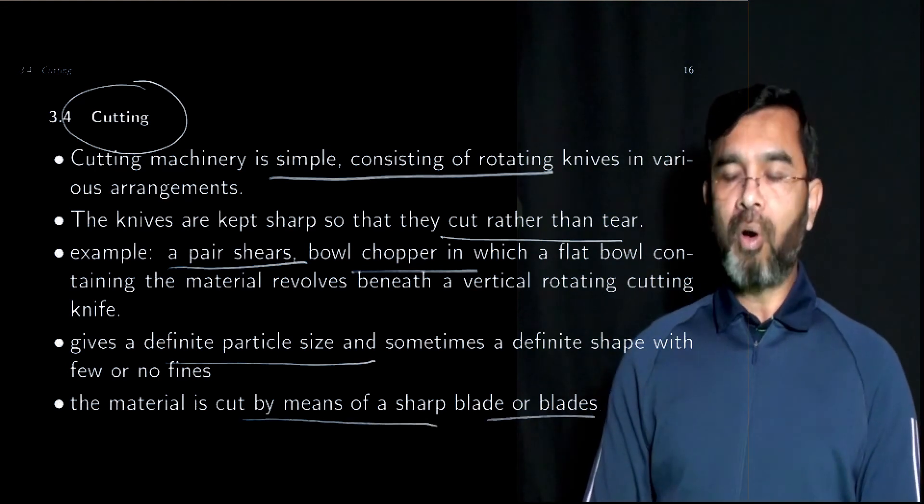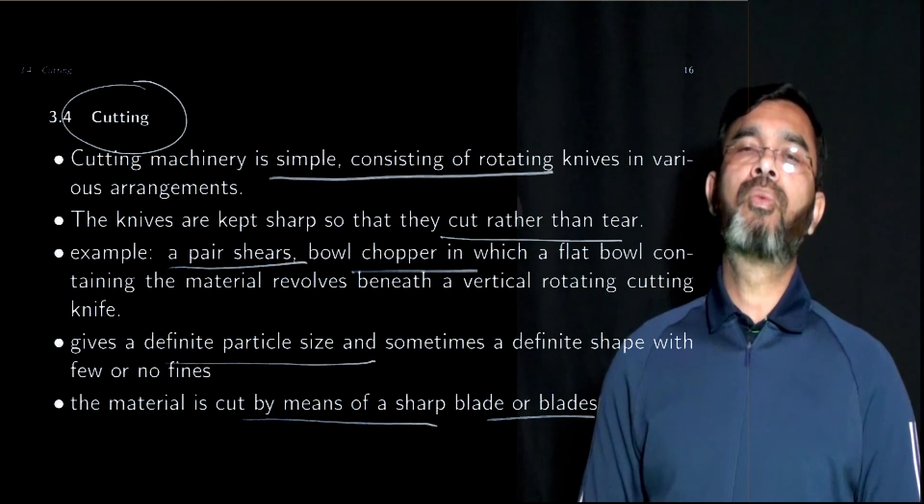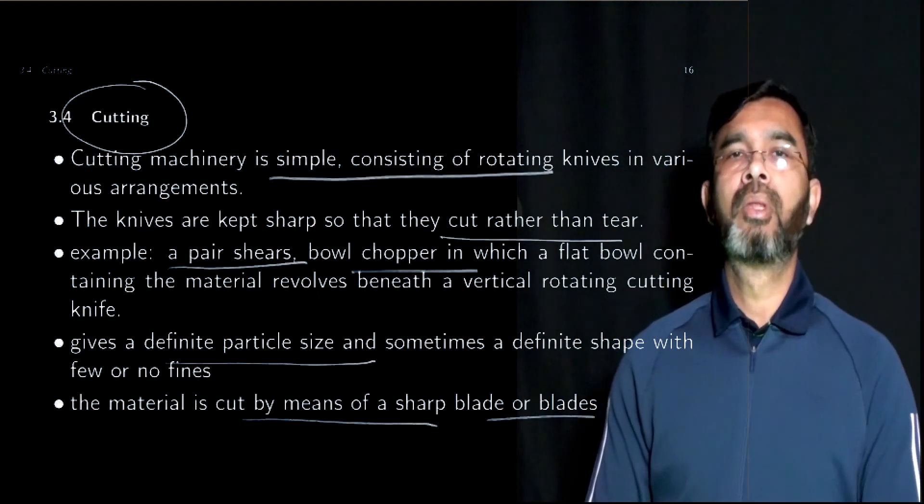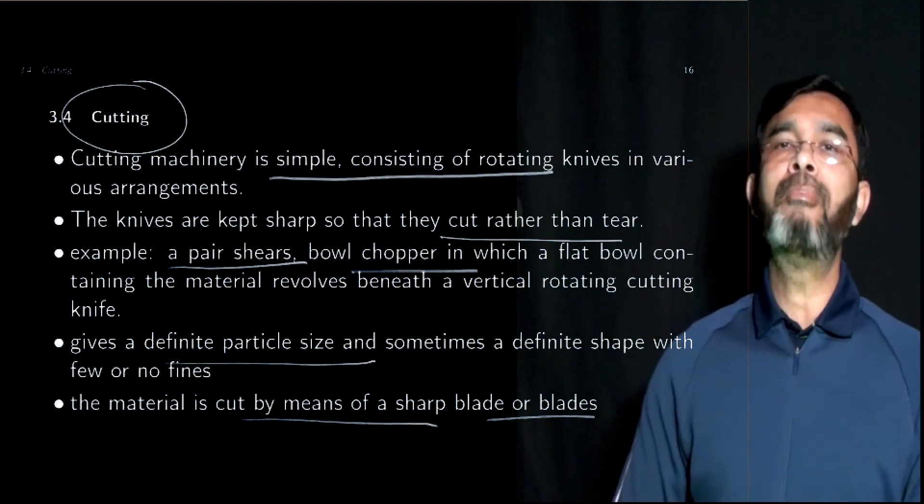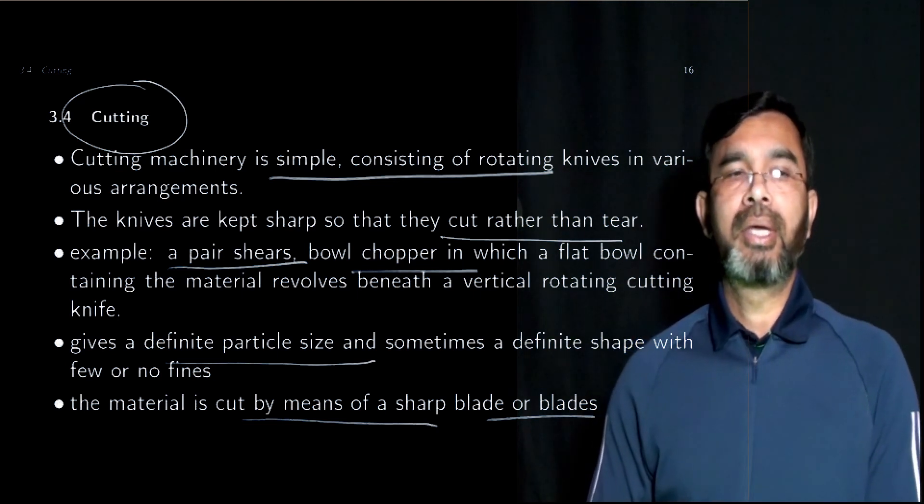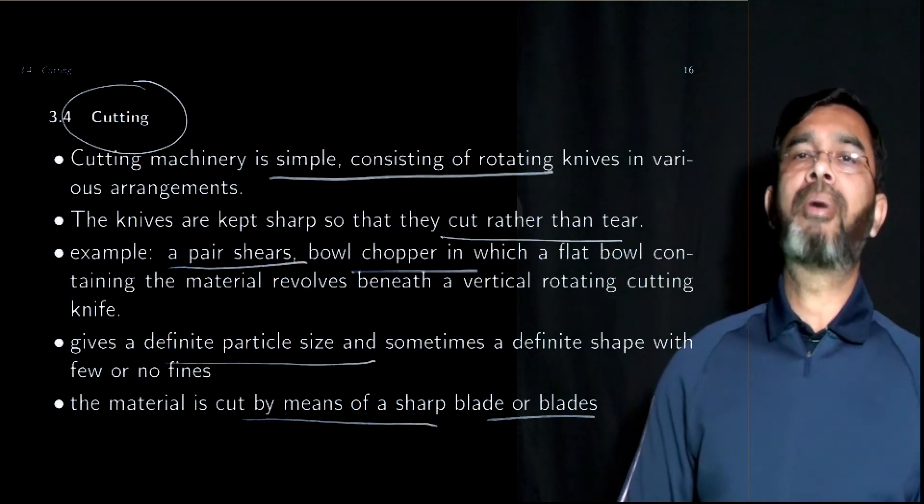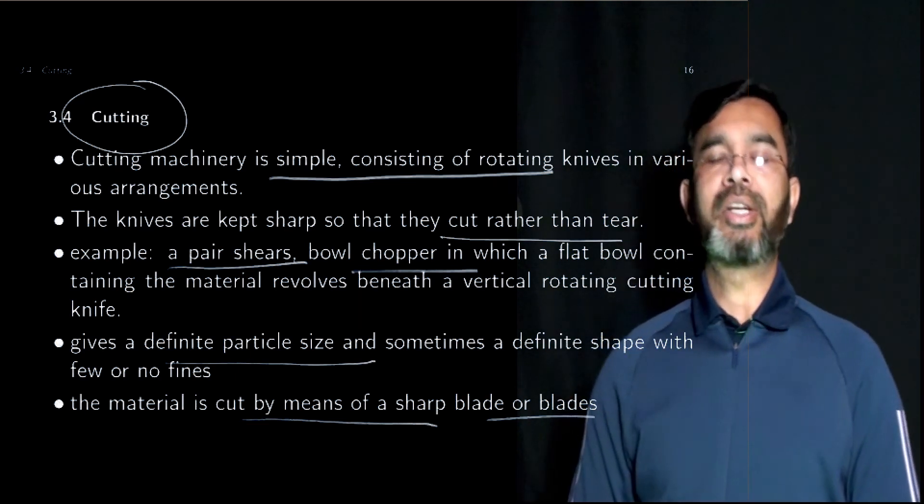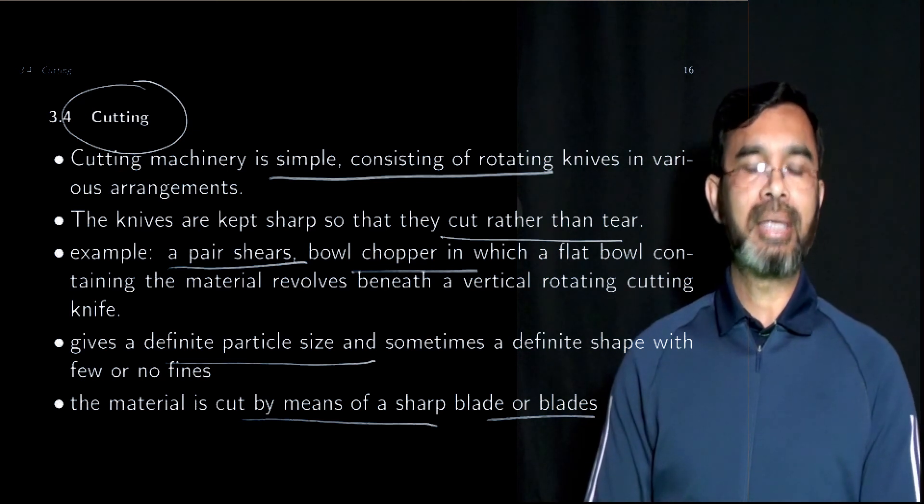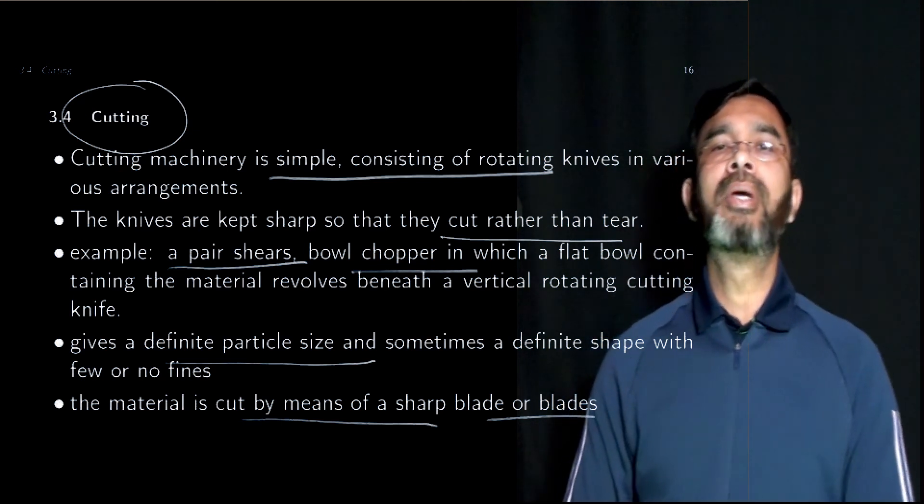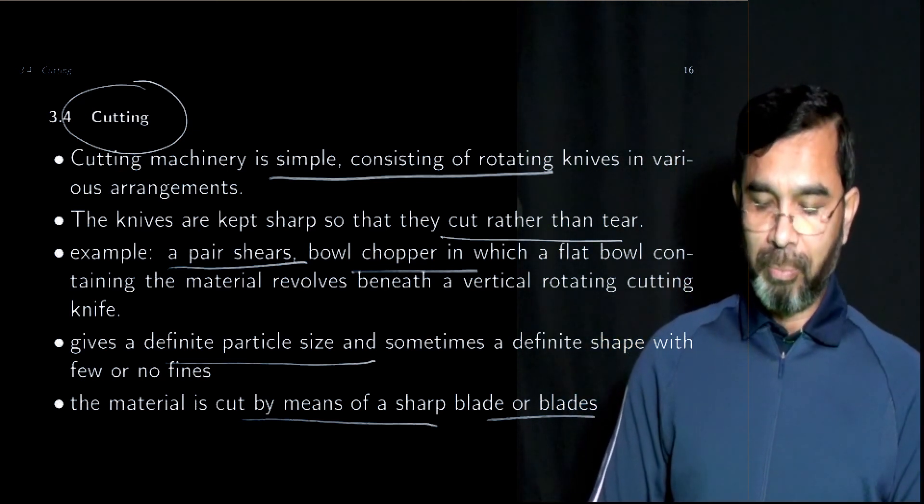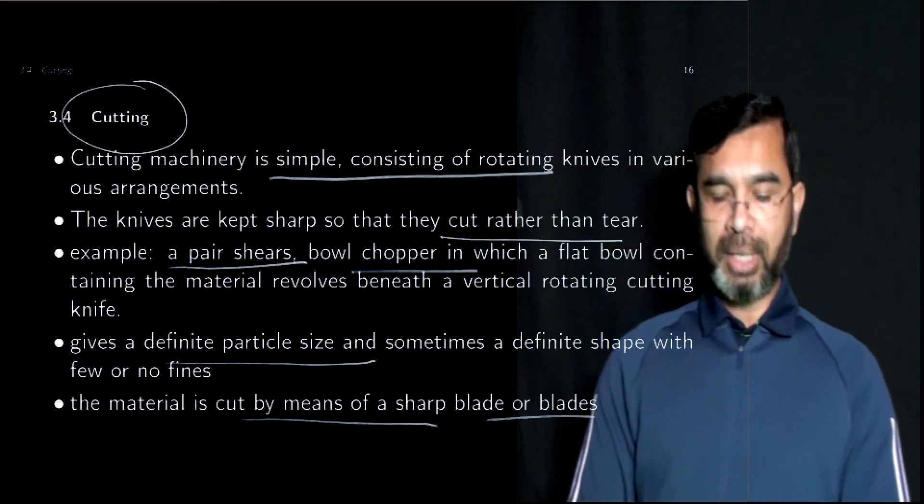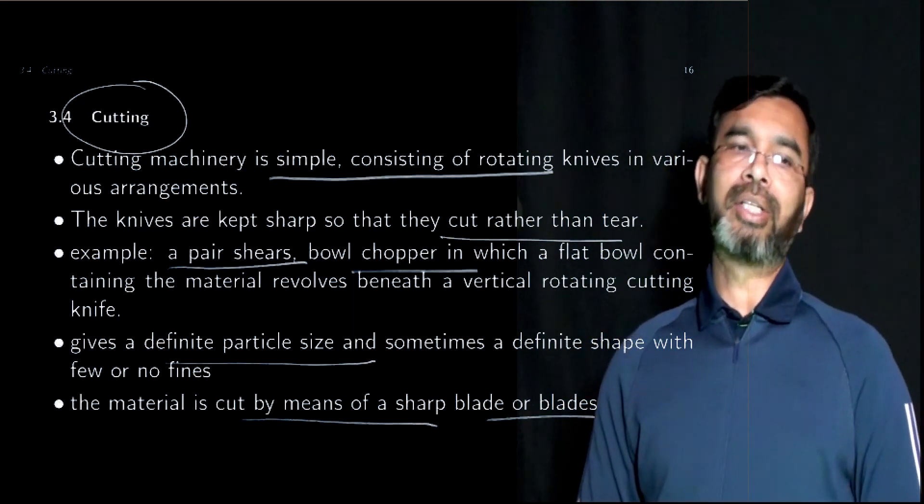So we have seen four different mechanisms. One is compression which is putting pressure. Another is impact when a surface hits the particle or the particle hits a surface with some force. The third one is attrition where pressure is applied and at the same time the surface moves so that it creates an attrition force. And the fourth mechanism is cutting.